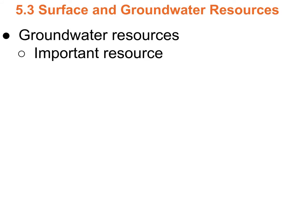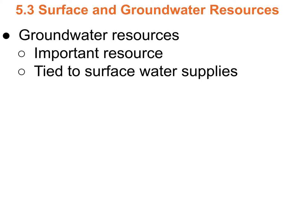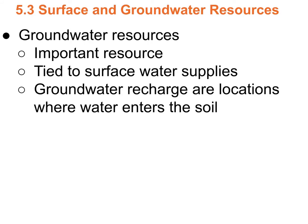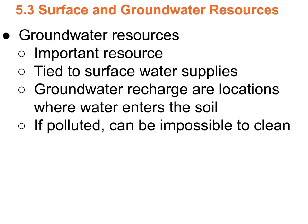Groundwater is just water in the ground — a very important resource. About half the country depends on groundwater, which is tied to surface water because that's where it comes from. Rain falls on the ground, the water percolates through, and eventually makes it into groundwater. The places where that happens are called recharge locations. If groundwater is polluted, it can be impossible to clean. In Santa Monica, most municipal water came from wells that were contaminated by leaking gas station tanks with a chemical that causes cancer — once contaminated, it's permanently unusable.